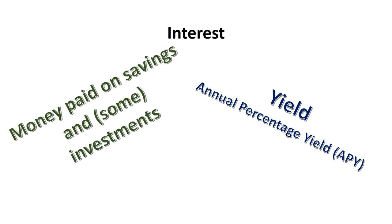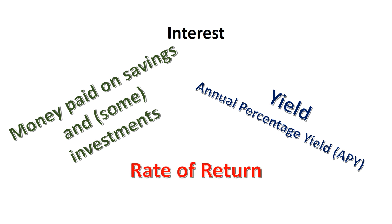Yield is normally expressed as an annual percentage, similar to the annual percentage rate for a loan — where the annual percentage rate was the amount you could expect to pay interest-wise per year on the unpaid balance. A percentage yield will be the amount you expect to receive in interest on an investment. It's also known as a rate of return, and all of the different investments can also be expressed as a rate of return as a percentage.